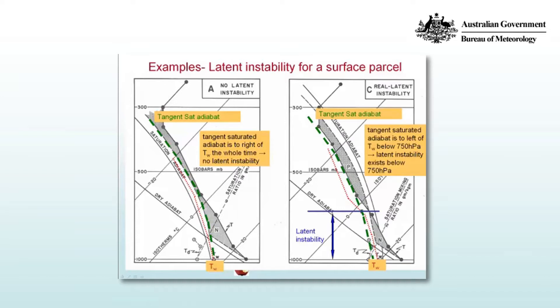Compare that to the figure on the right where the tangent saturation adiabat is marked in green and the wet bulb profile in red. The surface parcel possesses latent instability because as it lifts along a saturated adiabat, it eventually crosses the profile. Below 750 hPa, the atmosphere contains latent instability because for all parcels below this level, the wet bulb temperature lies to the right of the tangent saturation adiabat.